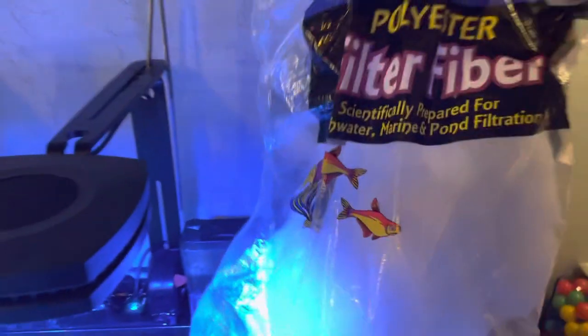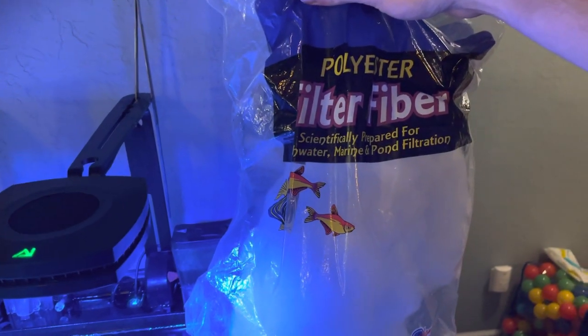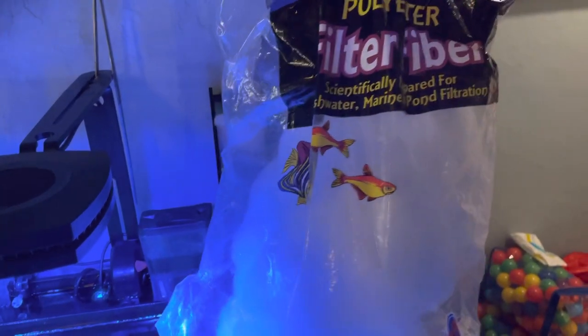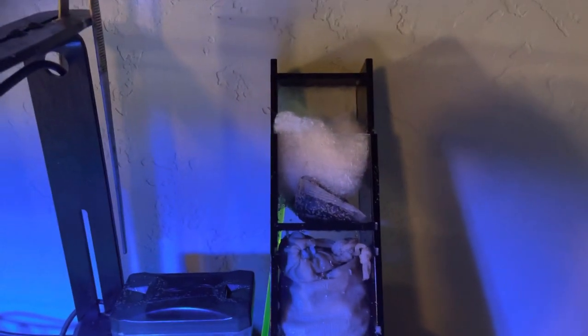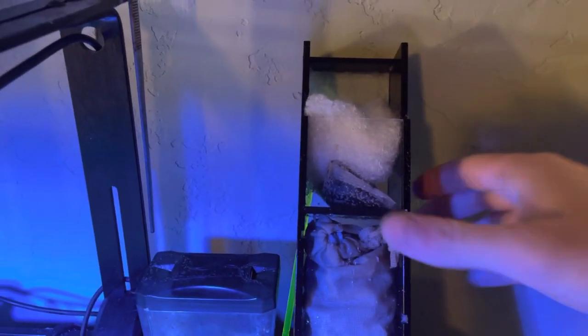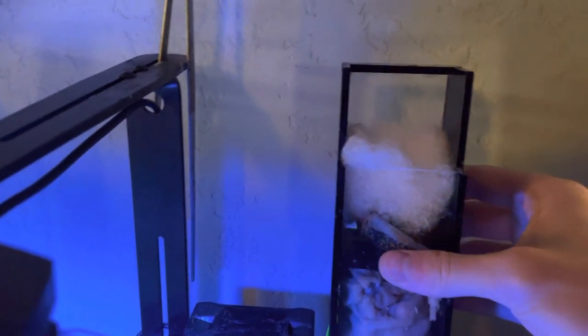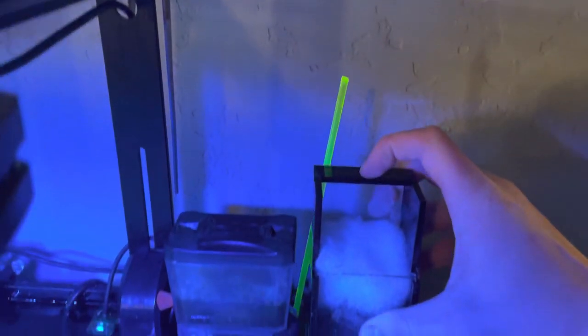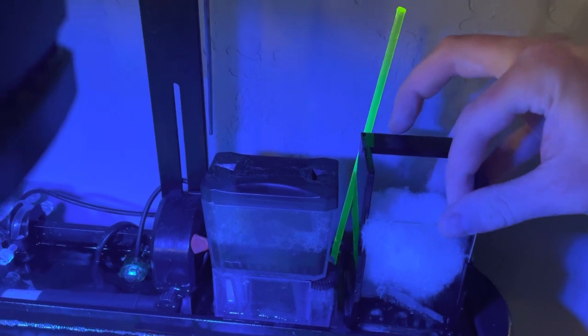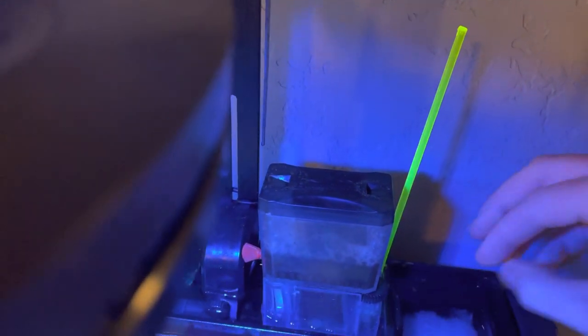Then up top, I have filter floss. So this is just a polyfill that I got on Amazon. It's pretty cheap. This bag lasts a long time. You just pull off a little piece and stick it in the top and that helps polish the water. It's really nice whenever you're scraping the sides of the glass and all that stuff floats up. It all gets caught in this polyfill, polyfiber, and then you can just switch that out and put some new in. So I do have to change that out every three or four days because I do feed a little bit heavier.